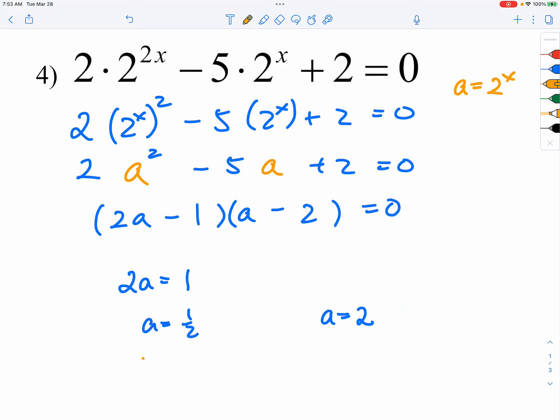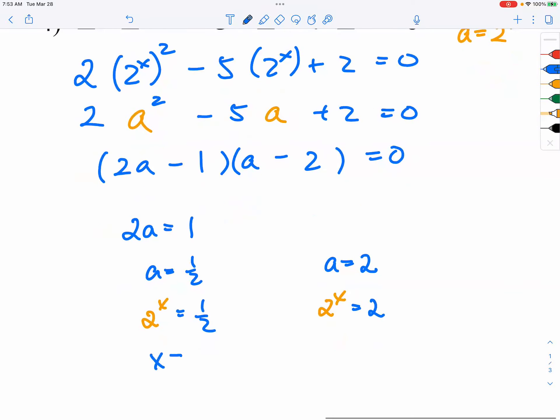So then we bring back the 2 to the X right here. We say 2 to the X is equal to 1 half, and 2 to the X is equal to 2. So that means X is equal to what? On the left, X is equal to? X is equal to, not A, X is equal to negative 1 and 1.